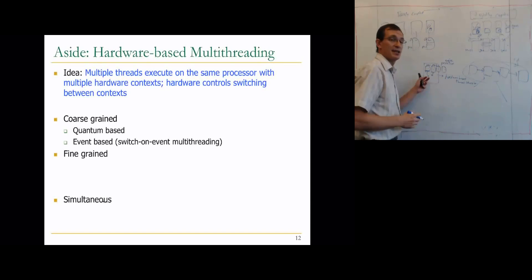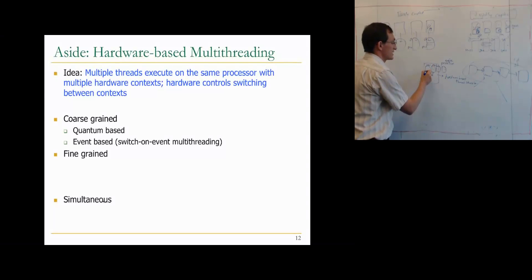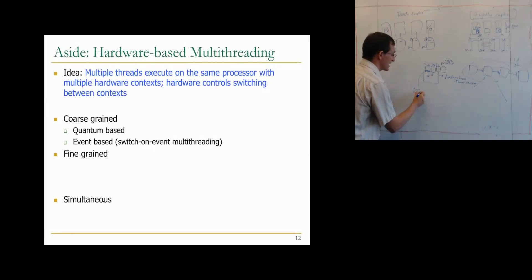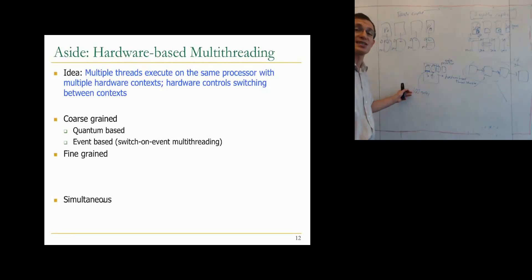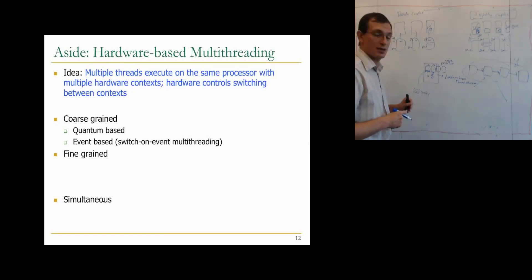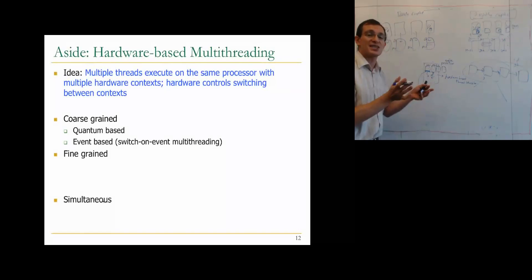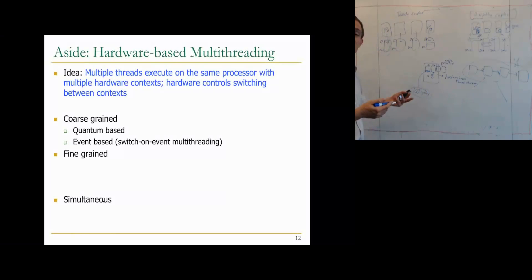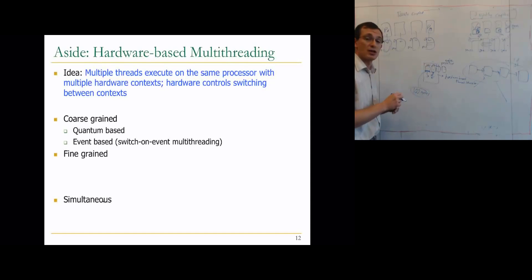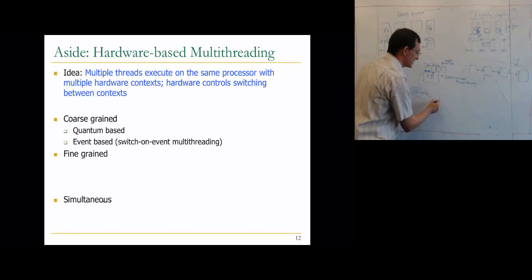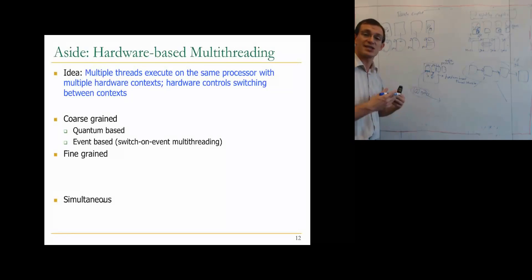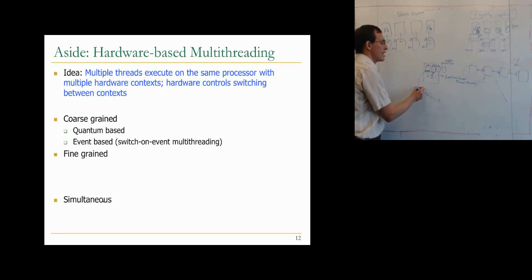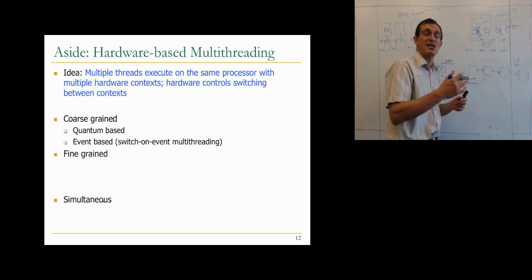Coarse-grained multi-threading is useful for latency tolerance. For example, when a thread gets a cache miss taking 100 cycles, the hardware can start fetching from another thread that doesn't have a cache miss, keeping the hardware utilized and improving throughput. With a single-threaded processor that gets a 100-cycle cache miss, you'd have to stall or do out-of-order execution, whereas switching to the OS for a context switch would take much more than 100 cycles. Multi-threading enables latency tolerance and higher throughput.